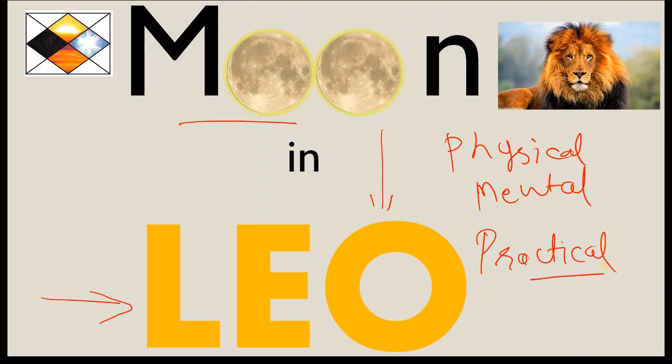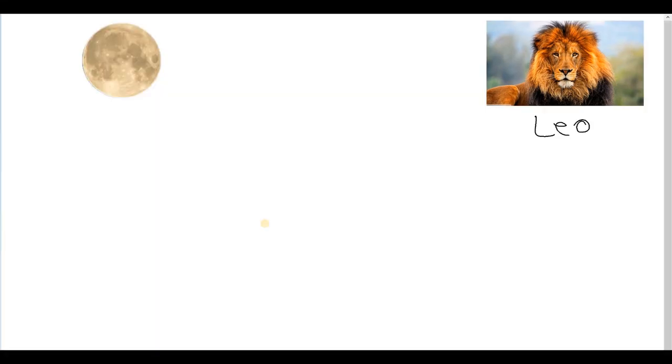There are three primary parameters which define the sign of Leo. First of all, this is a fiery sign and its cardinality is fixed. It is a fixed fiery sign, and the symbol of Leo sign is the royal animal and king of the jungle, the lion.